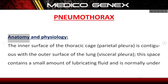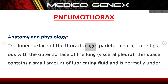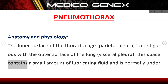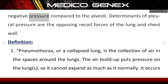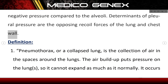Pneumothorax: Anatomy and Physiology. The inner surface of the thoracic cage, parietal pleura, is contiguous with the outer surface of the lung, visceral pleura. This space contains a small amount of lubricating fluid and is normally under negative pressure compared to the alveoli. Determinants of pleural pressure are the opposing recoil forces of the lung and chest wall.